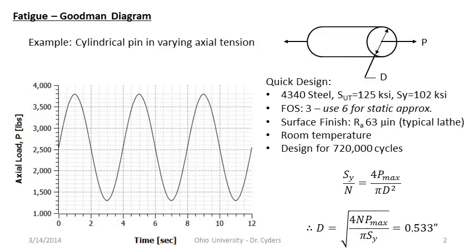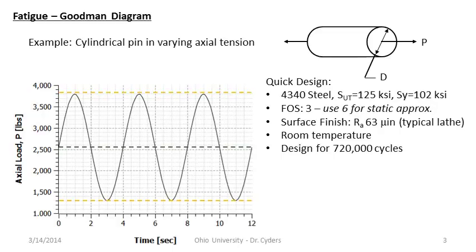Let's take our static approximation and run it through fatigue design to check the factor of safety. Generally, the approach to a fatigue problem requires iteration. The easiest way is to come up with something close that works — like our static design — and then run that through the fatigue process to get a point of reference: are we way too big, way too small, or somewhere in the ballpark?